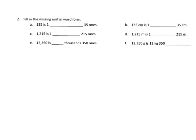So now we're going to fill in the missing unit in word form. So we've got 135. Well, that's 100 plus 35 ones. And then let's do problem C, 1,215. Well, that's 1,000 is our unit, and then 215 ones.